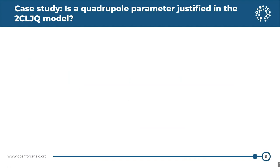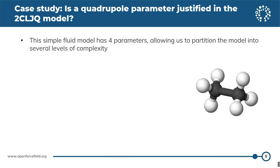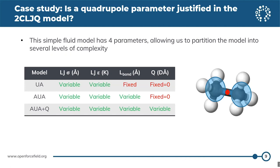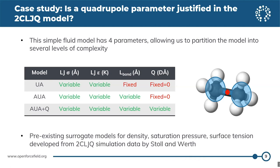To test this strategy, we looked at a simple case study: a two-center Lennard-Jones plus quadrupole model. This can be used to parameterize diatomic and diatomic-like molecules. The model has two Lennard-Jones sites with epsilon and sigma parameters, a variable bond length separating those sites, and a quadrupole parameter controlling the strength of the quadrupole interaction. Because of these different parameters, we can split this into different levels of complexity. Conveniently, pre-existing surrogate models for density, saturation pressure, and surface tension are already available in the literature.